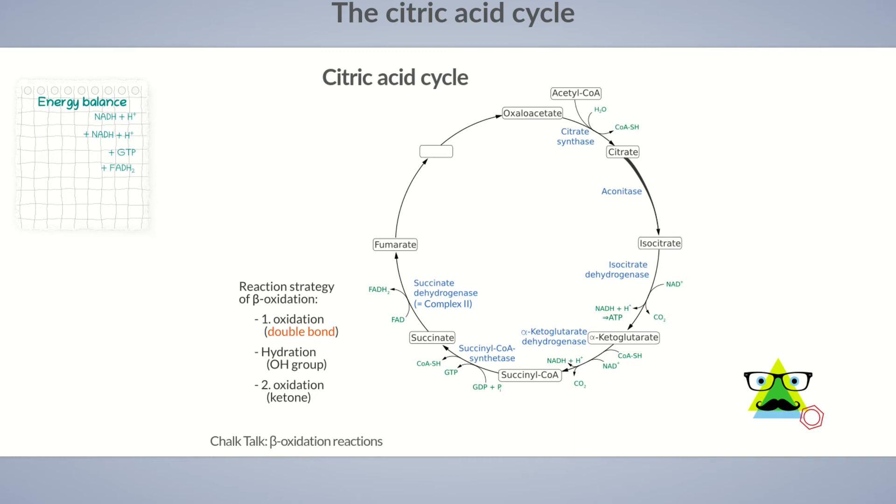In the 7th step of the citric acid cycle, the double bond of fumarate is hydrated by fumarase. As a result, a molecule with an additional alcohol group is formed, malate.